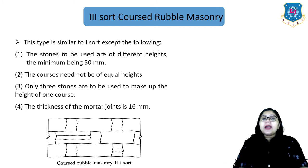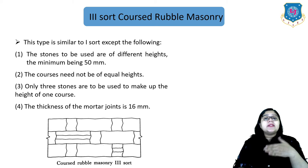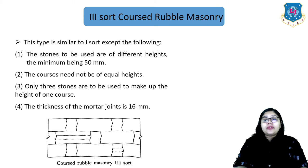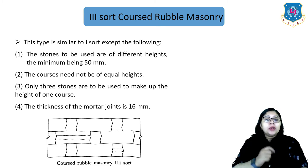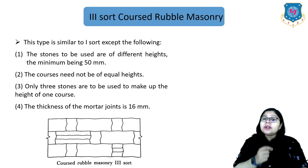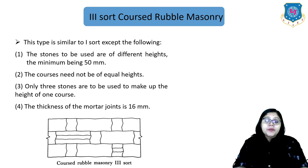The third-shot coarse rubble masonry is also similar to type 1 but with further exceptions: the stones are of different heights with a minimum of 50 mm, and courses need not be of equal height. Only three stones are used to make up the height of one course — that is the difference between two-shot and three-shot — and the thickness of mortar joints is increased to 16 mm.